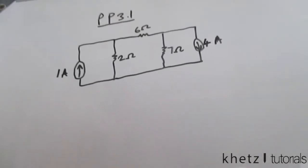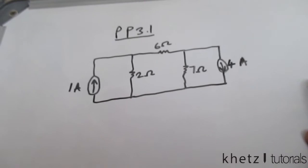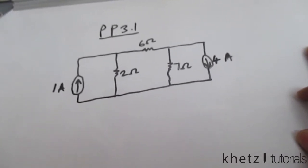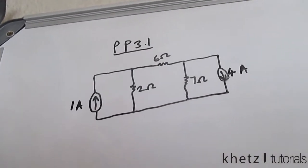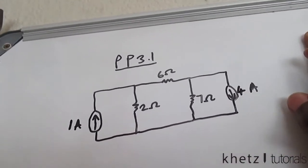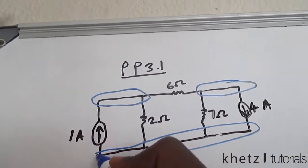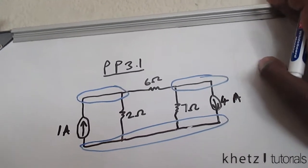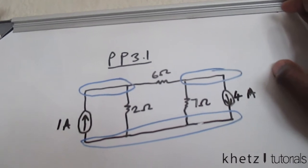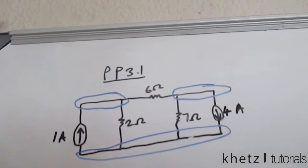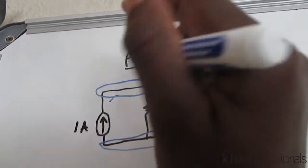Welcome to CAT Tutorials. In this video I'll be doing practice problem 3.1. The question says find the node voltages for this circuit. The first step is to identify the nodes. I have that node there, that is one node, that is another node, and at the bottom all of this is one node. The method we're going to use is called nodal analysis.